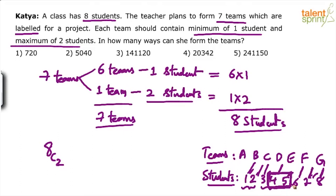After grouping the two students together and considering them as only one student, how many units do we have? Seven units. And how many teams do we have? Seven teams — A, B, C, D, E, F, G — seven positions. There are seven students and seven teams. Four and five are tied together, considered as only one student. In how many ways can you assign seven units to seven teams? Seven factorial ways. So 8C2 into 7 factorial is your answer.